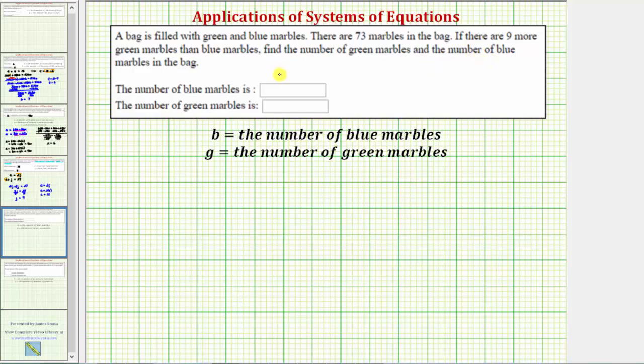Let's first define the variables to represent the unknowns. Let b equal the number of blue marbles and g equal the number of green marbles.